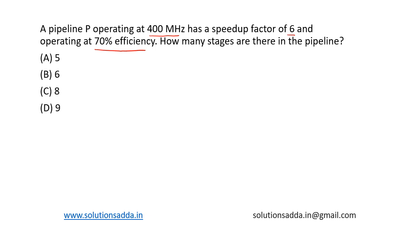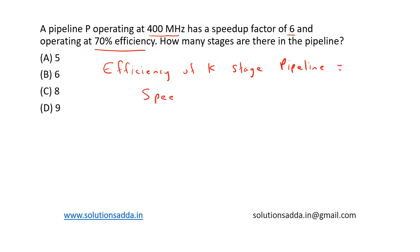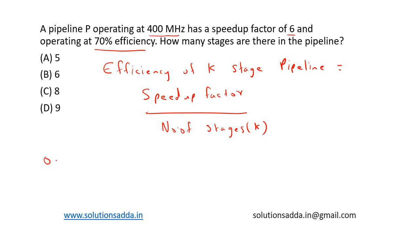This is a direct question with a direct formula. The formula is: efficiency of a K-stage pipeline is equal to the speedup factor divided by the number of stages K. Here, efficiency is given as 0.7, and speedup factor is 6, so we have 0.7 = 6 / K.